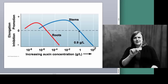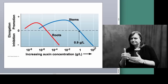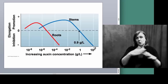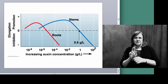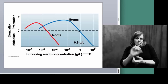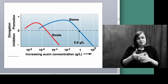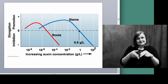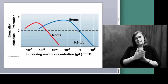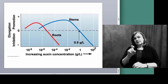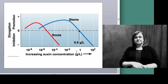Hormones work in very small, trace amounts — in your body, in a plant system. When we get high concentrations of some of these hormones, they are chemicals and will become toxic to the plant.